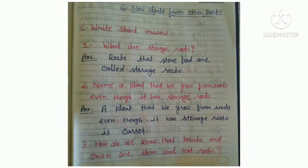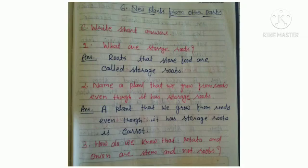Now question number C, write short answers. First question: what are storage roots? Answer: roots that store food are called storage roots. Question number 2: name a plant that we grow from seeds even though it has storage roots. The answer is carrot.